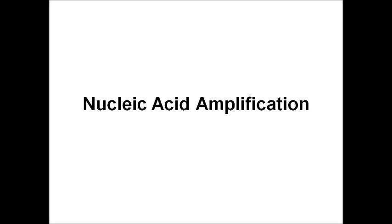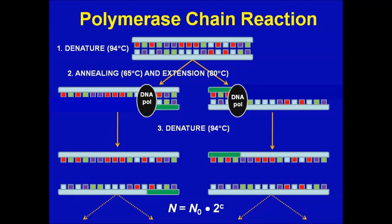Now that we've lysed the organisms, extracted the DNA, and purified it, comes the fun part: how do we amplify the signal? If we're looking for one unique cell, there may not be much DNA. The best example of nucleic acid amplification is polymerase chain reaction, or PCR, conceived in the 1980s by Kary Mullis, who received the Nobel Prize for this work. PCR relies on similar mechanisms used by our body to replicate DNA.